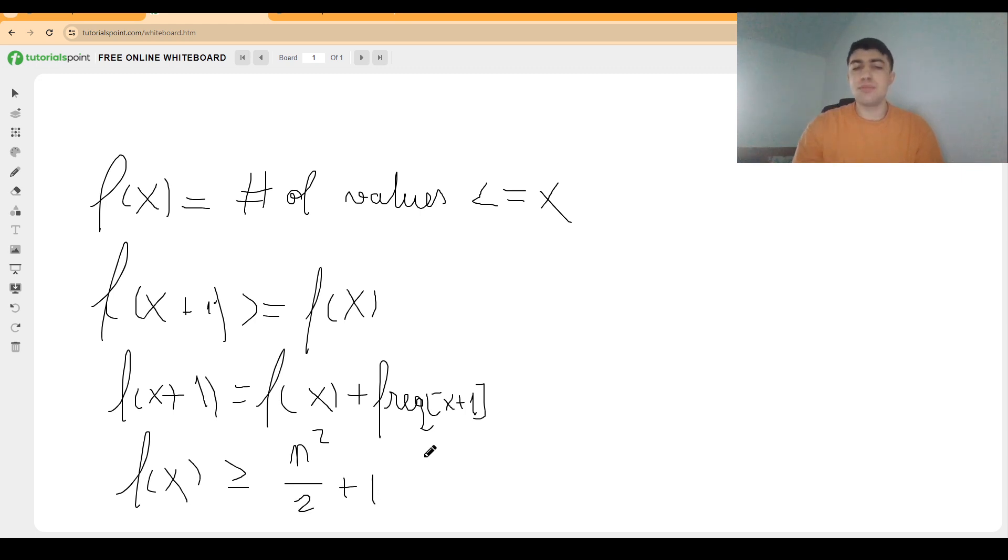Why do we care about this position n squared over 2 plus 1? Because in an array of n squared values, assuming that we index it from 1, the median will be placed at the position n squared over 2 plus 1. For example, for n equal 3, we would have 9 over 2 plus 1, which is 5, which is true according to the problem statement and the example given there.